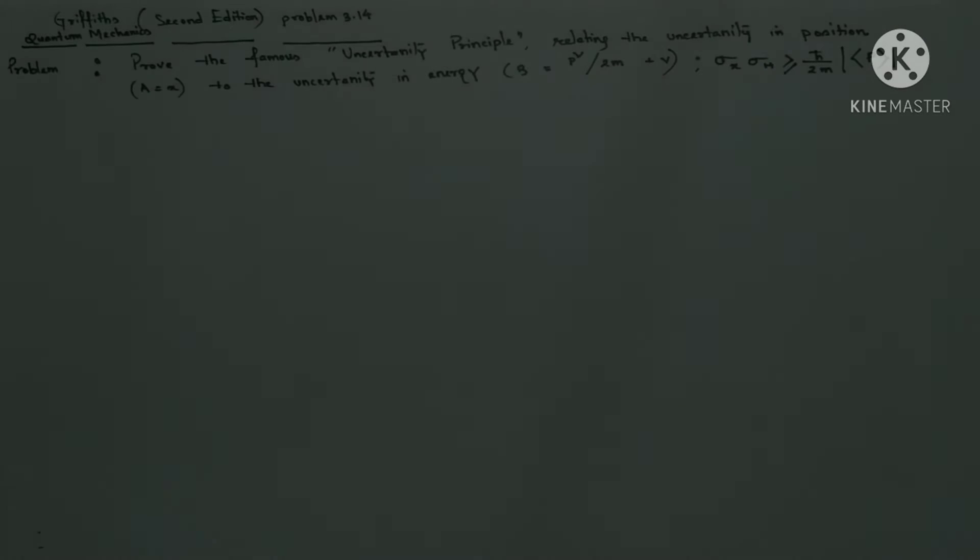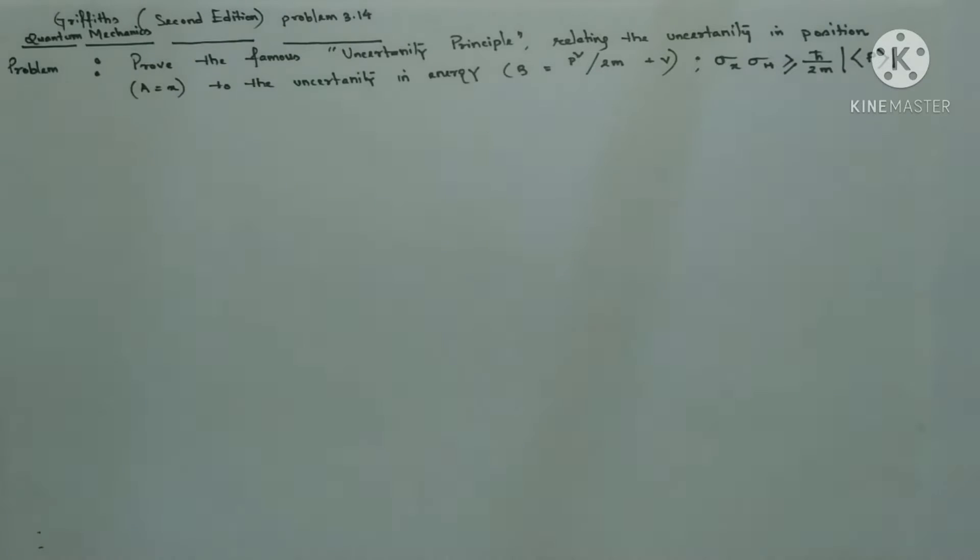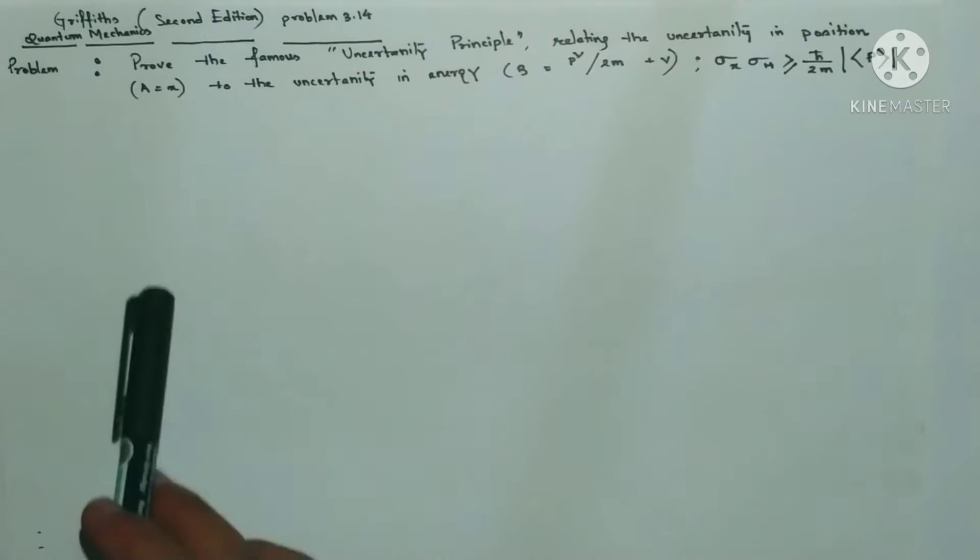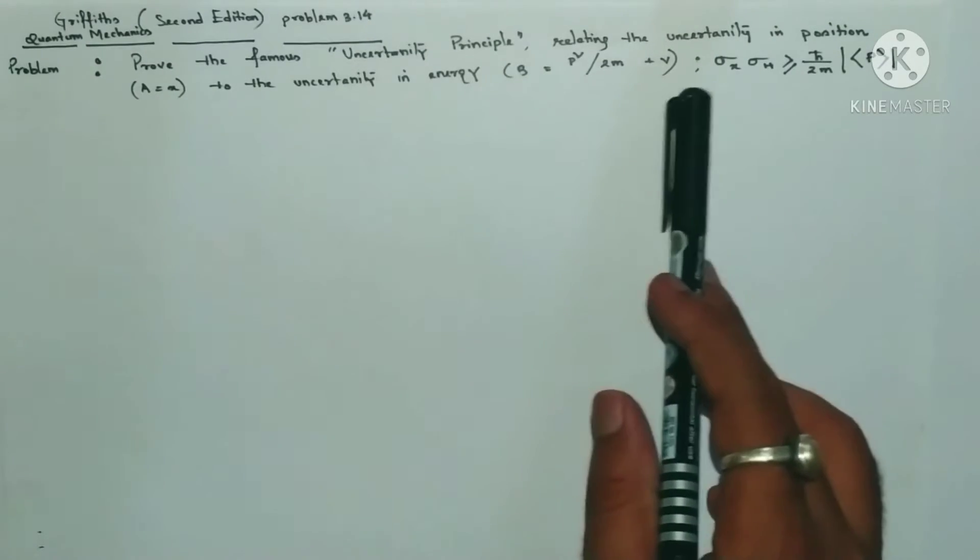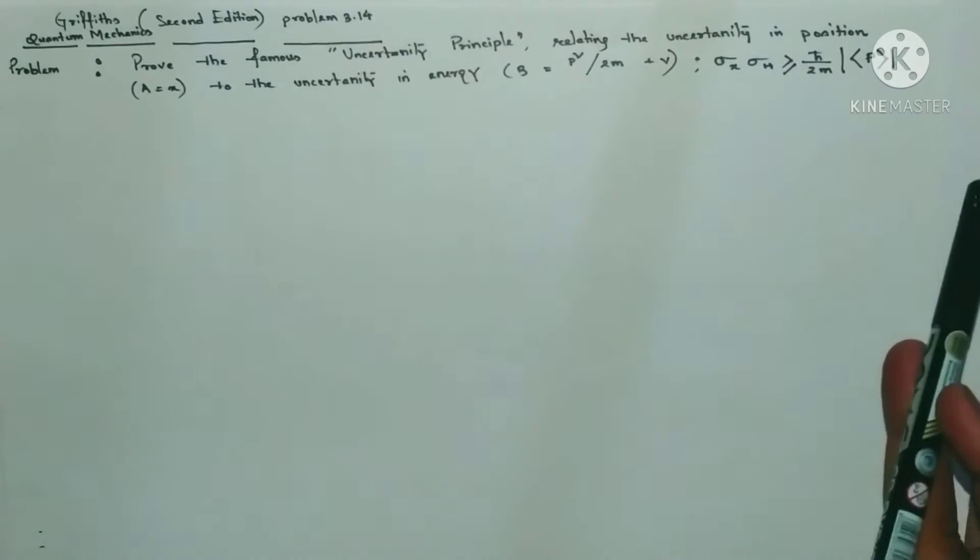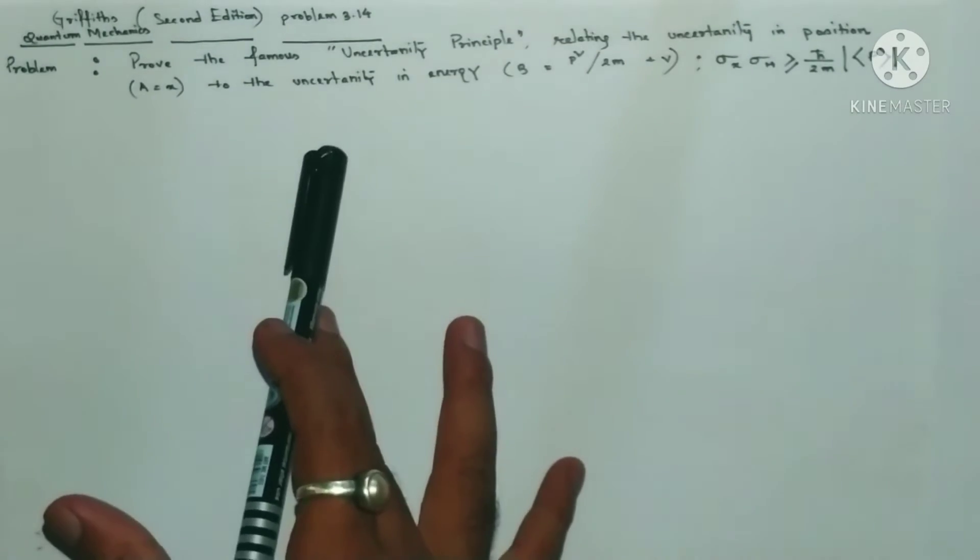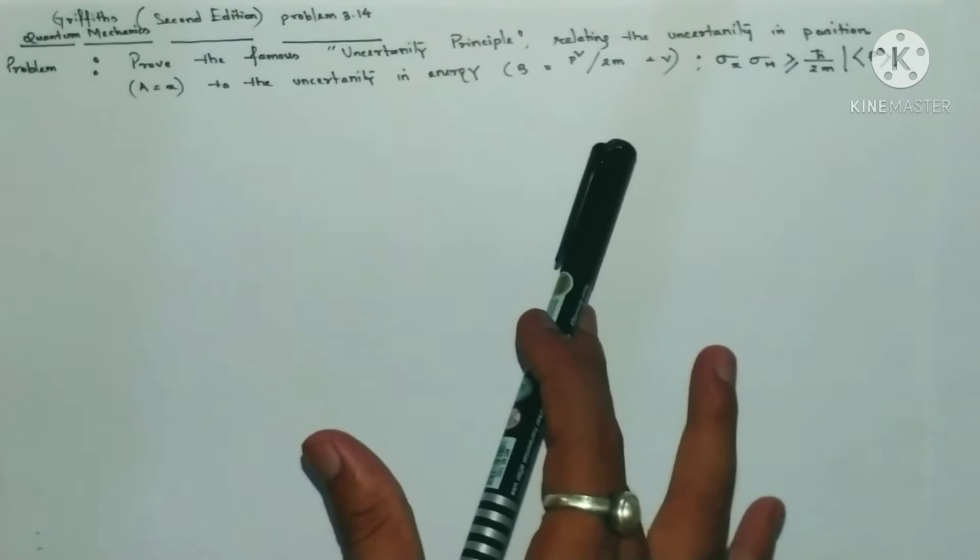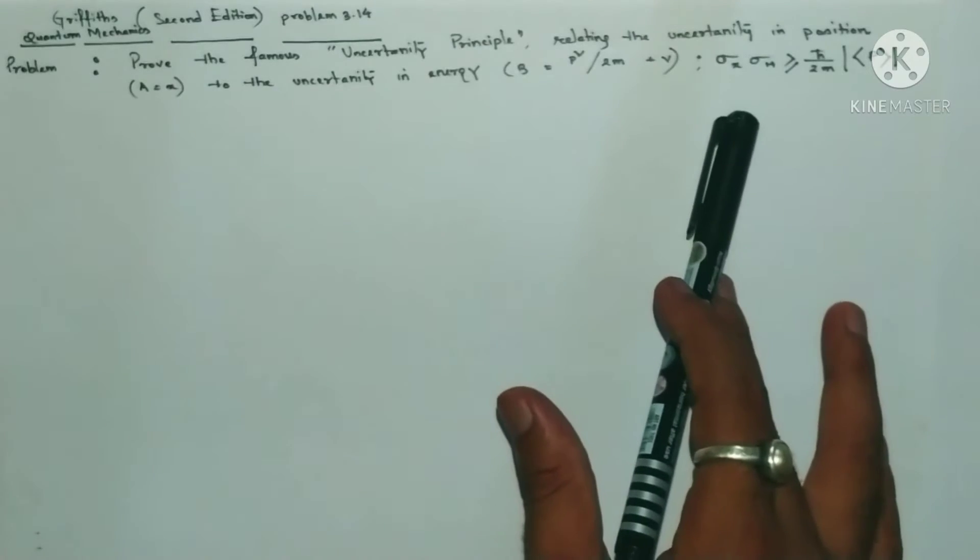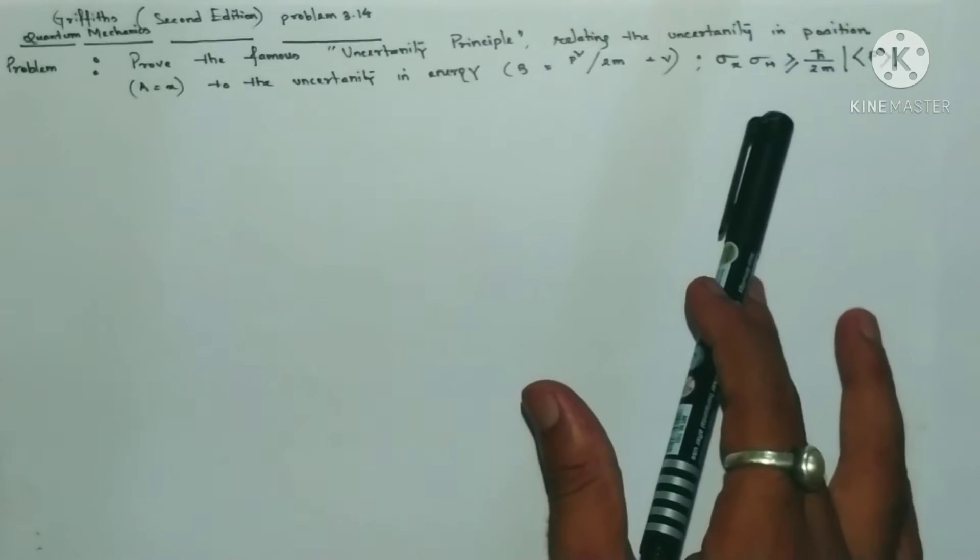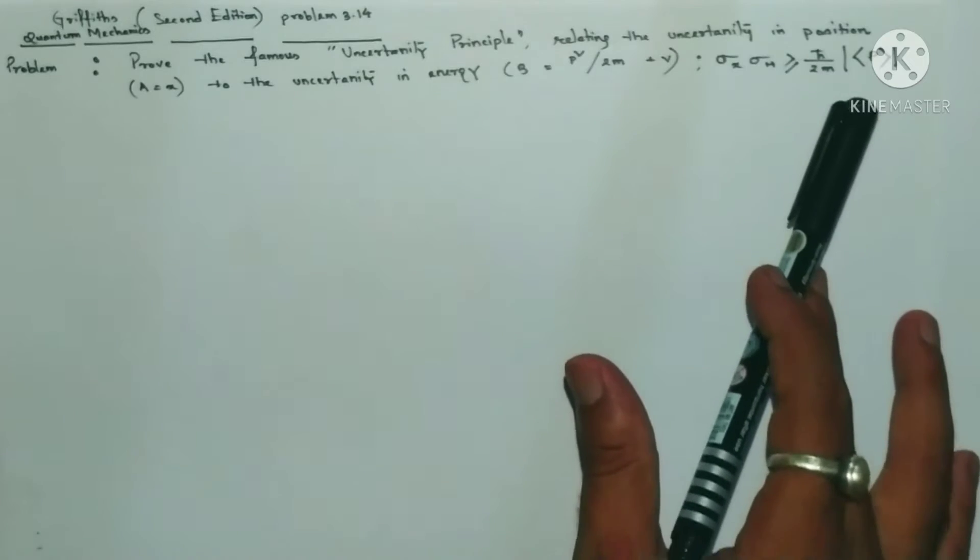Hi everyone, this is a question from Griffith Quantum Mechanics Second Edition, problem number 3.14. The problem is to prove the famous uncertainty principle relating the uncertainty in position A equals X to the uncertainty in energy, where B equals P squared by 2m plus potential V. We need to show that sigma X multiplied by sigma H is greater than or equals to h-bar over 2m times the expectation of P under modulus.